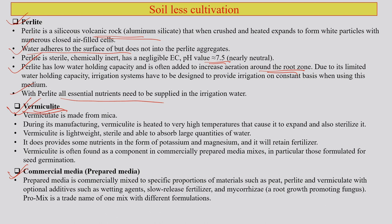Vermiculite is made from mica. During manufacturing, vermiculite is heated to a very high temperature, causing it to expand and sterilize. It is lightweight, sterile, and able to absorb large quantities of water. Vermiculite provides some nutrients in the form of potassium and magnesium and importantly retains fertilizer. It is also found as a component in commercially prepared media mixes, particularly those formulated for seed germination, since many crops require seeds to be germinated in one system before being grown in another.